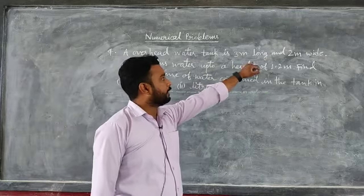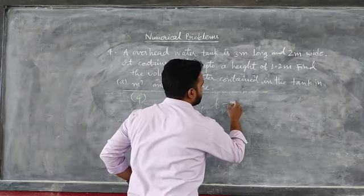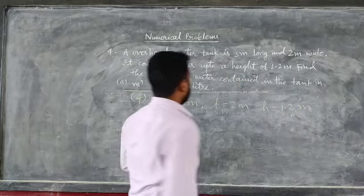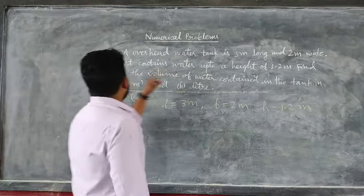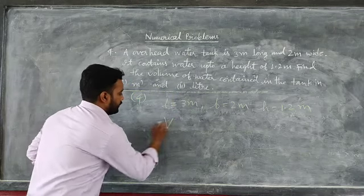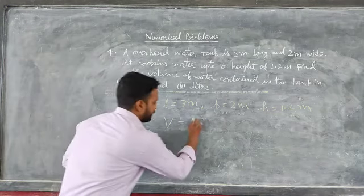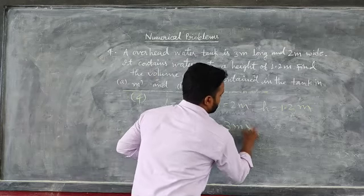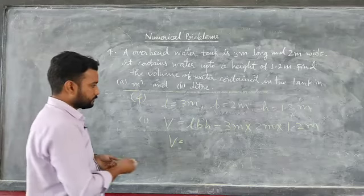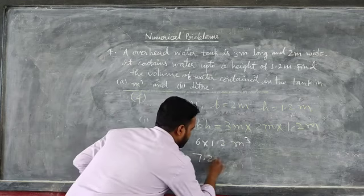Question number 5: An overhead water tank is 3 meters long, 2 meters wide, and contains water up to a height of 1.2 meters. Volume equals L into B into H: 3 into 2 into 1.2. We get 6 into 1.2, so V equals 7.2 cubic meters.